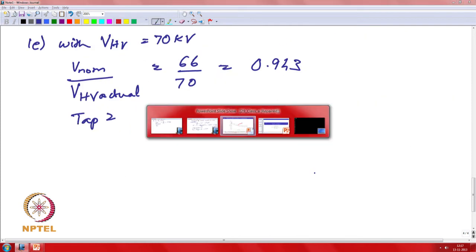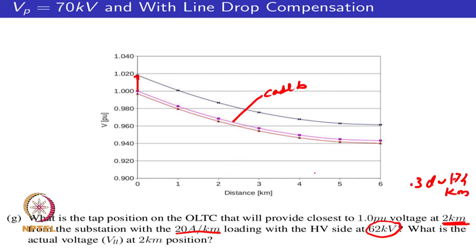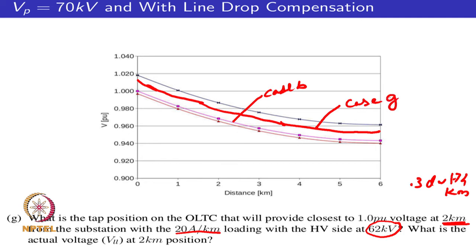With tap 9 selected, the voltage profile (case G) starts at around 1.015 per unit at the substation and is around 0.98 per unit at distance 2 km. Because of the finite number of taps, quantization effects mean you cannot achieve the exact target — but tap 9 is the closest available option.